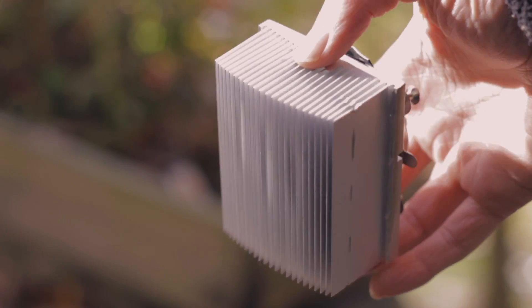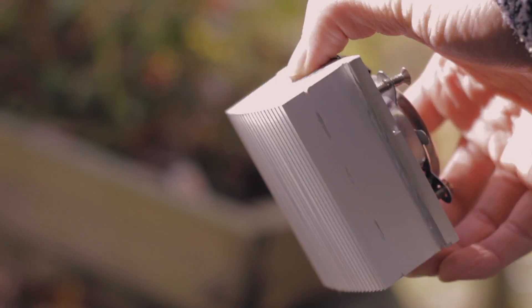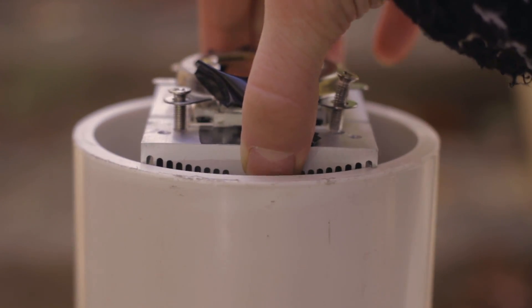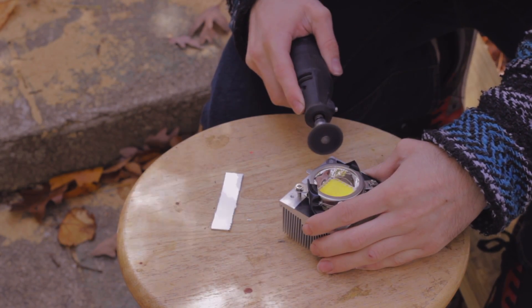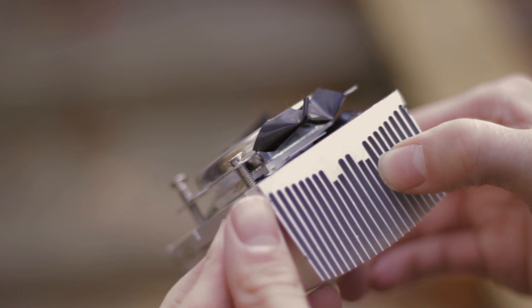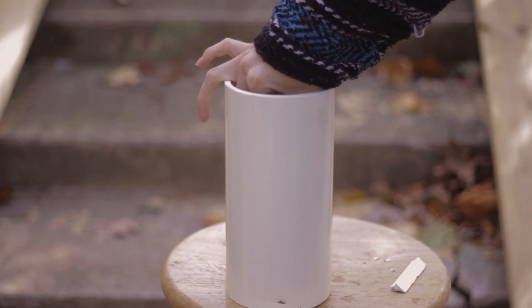Even with the sides removed from the heat sink, the heat sink still does not fit in the PVC pipe. So we're going to have to remove the corners now of the heat sink. But after removing the corners, the heat sink should fit into the PVC pipe very well.